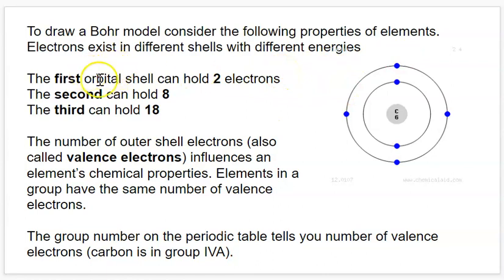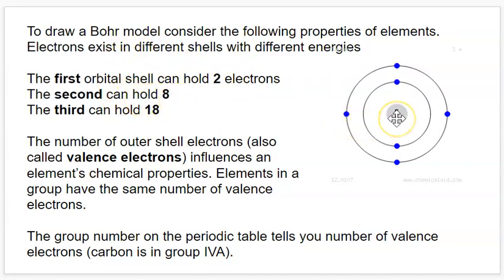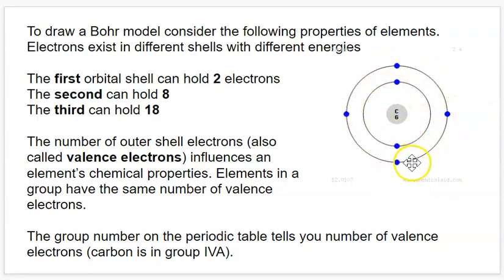The first orbital shell can hold two electrons. The second can hold eight. So for something like carbon that has six electrons, it's going to have two in its first shell and four in its second shell, and then also room for four more in its other shell if it were to gain some electrons.